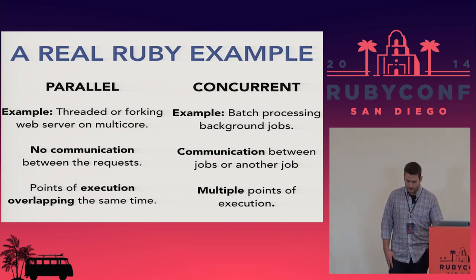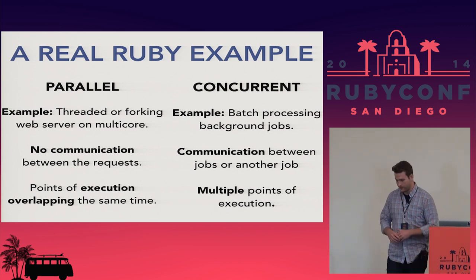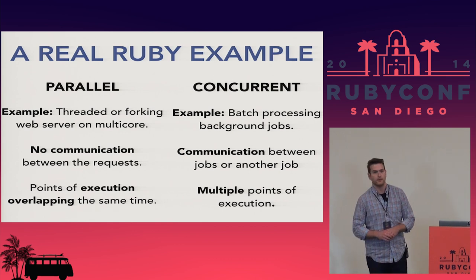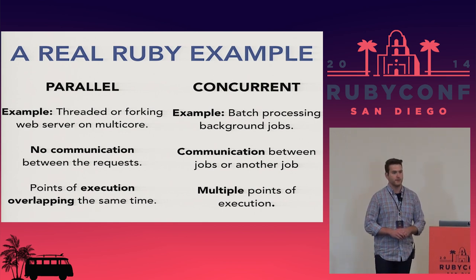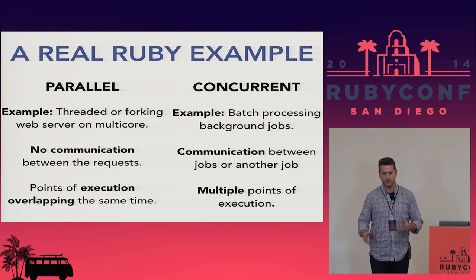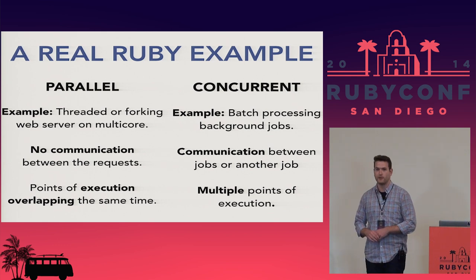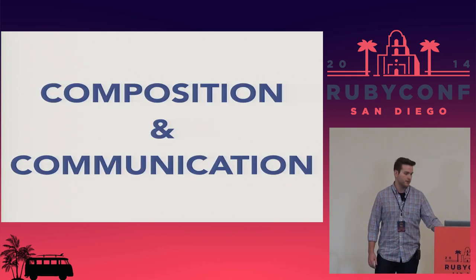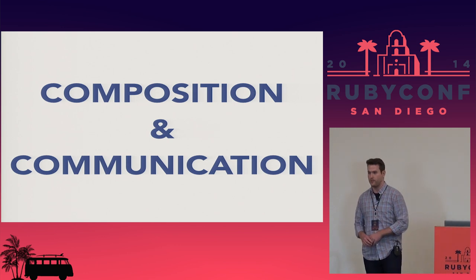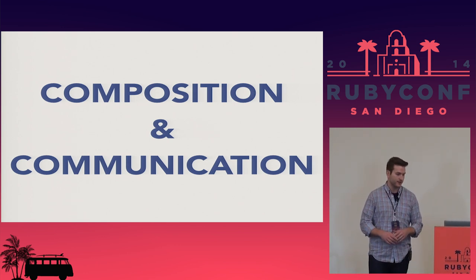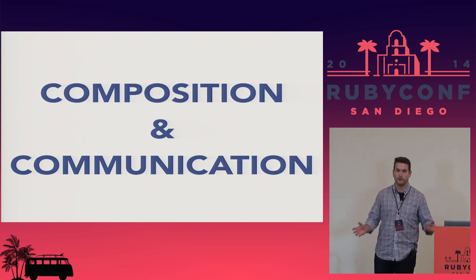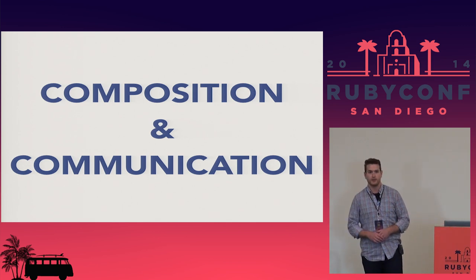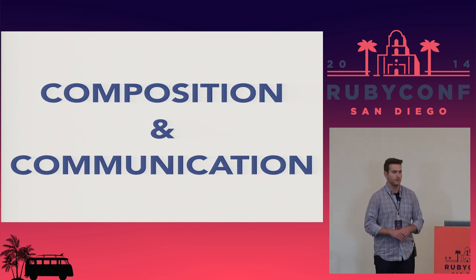The reason there's a lot of focus on concurrency right now is that we want the benefits of parallelism but we want it in a clear, concise way. What concurrency is really about are these two things: composition and communication. It's at the intersection of performance and clarity, and that's why there are tons of different models for how to do it.